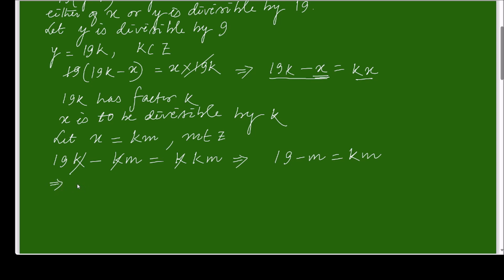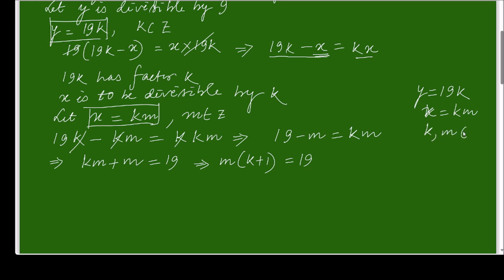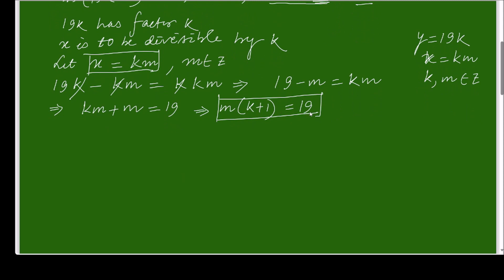Taking m to one side, I get m times (k plus 1) equals 19. To recall: we set y equals 19k and x equals k times m, where k and m are integers. From these I will find the pairs of values satisfying this equation.